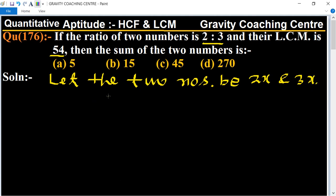And according to the question, LCM is given as 54, and the LCM of 2x and 3x is 2 into 3 into x equal to 54.